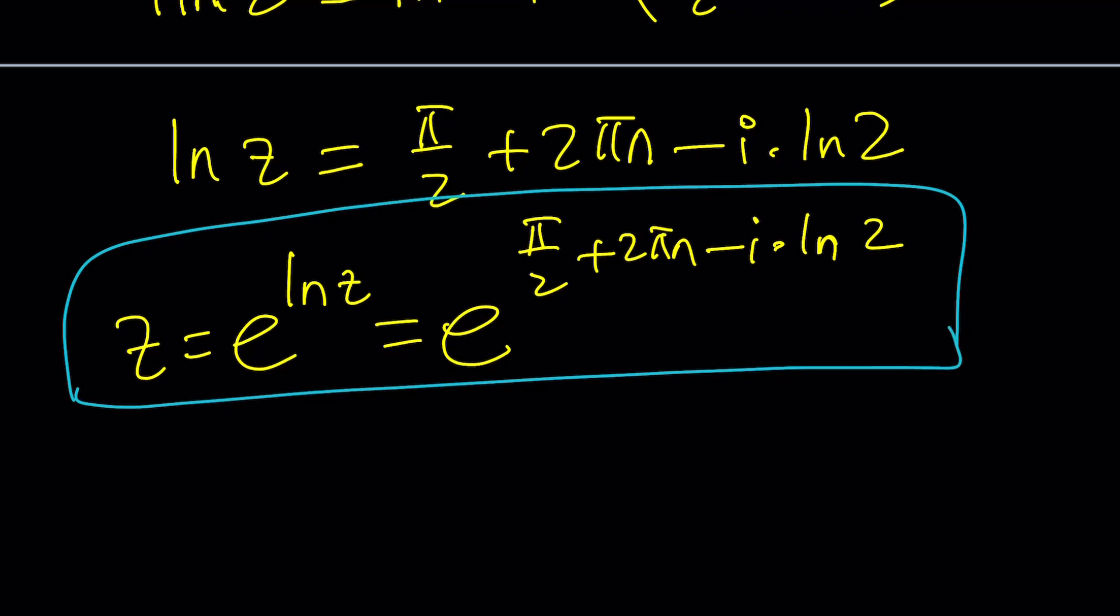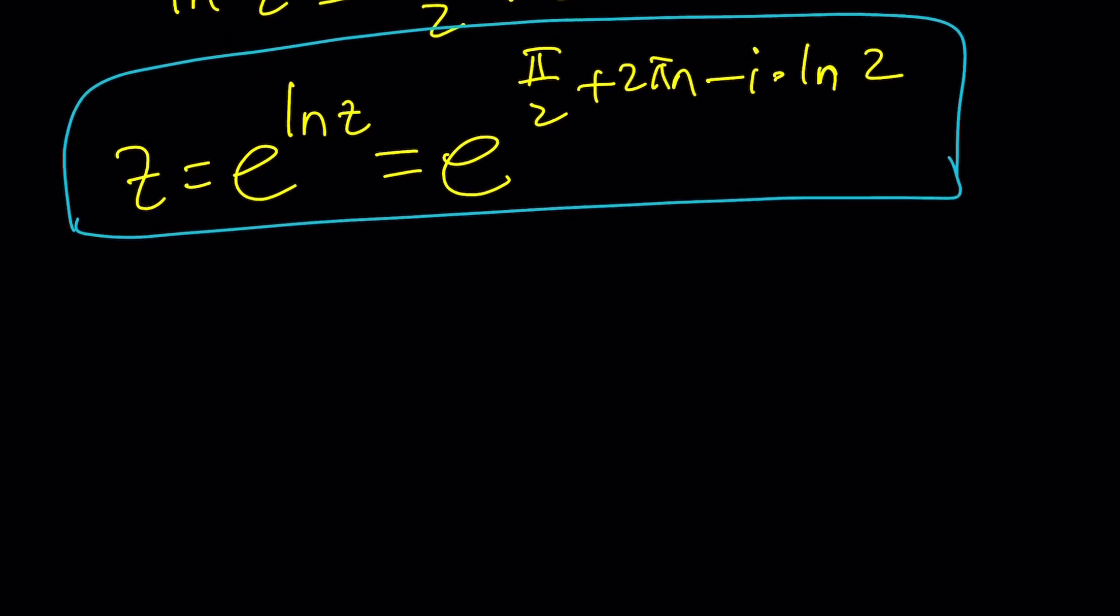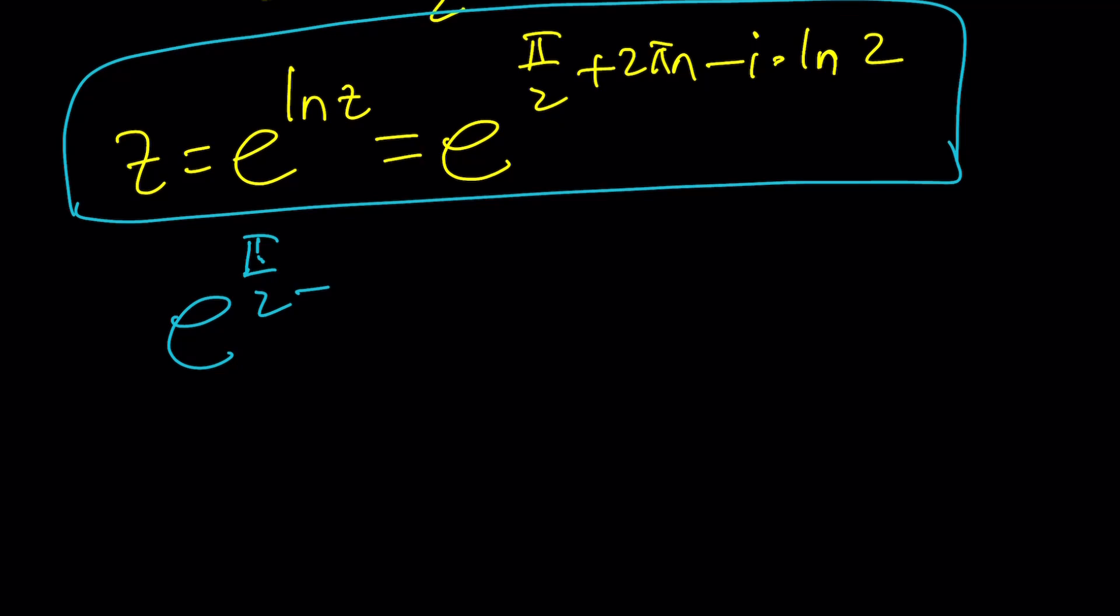But if you needed to write it for some reason, if you needed to write this in A plus B I form, which is called the standard form, then you could do the following. Separate these two things. First of all, you can write E to the power pi over 2 plus 2 pi N. And then times E to the power negative I LN2.